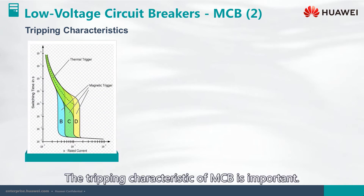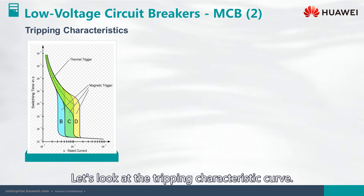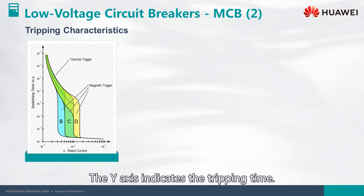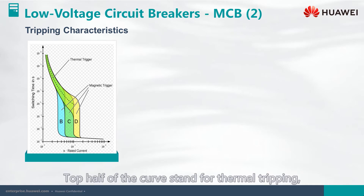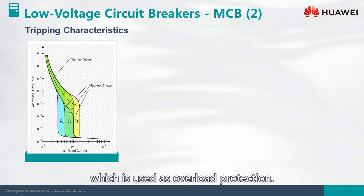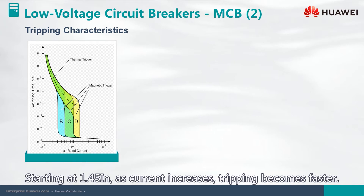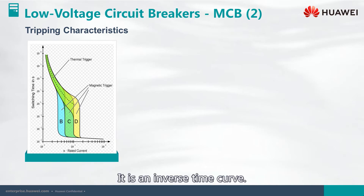The tripping characteristic of MCB is important. Looking at the tripping characteristic curve, the x-axis indicates the tripping current in multiples of rated current, and the y-axis indicates the tripping time. The top half of the curve represents thermal tripping, used as overload protection. Tripping is relatively slow, as heating is slow. Starting at 1.45 times rated current, as current increases, tripping becomes faster — it is an inverse time curve.